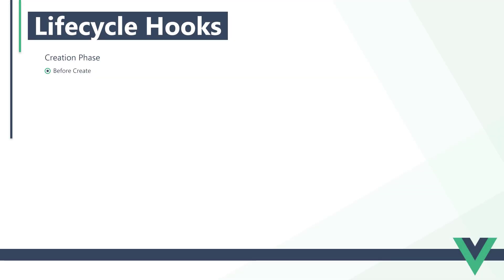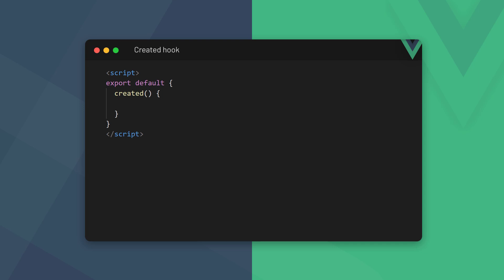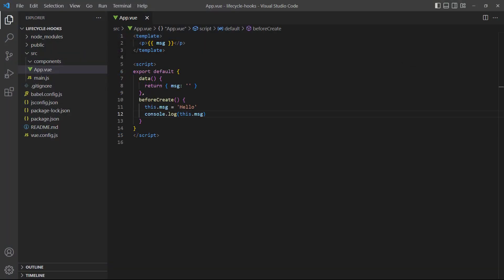The second step in the creation phase is the created step, which uses the created lifecycle hook. The hook method will be invoked after the app has fully initialized. This is the time that Vue will compile the template — for example, all the string interpolations are replaced with the concrete values that should be shown to the user.